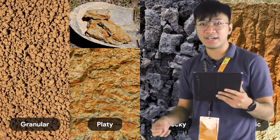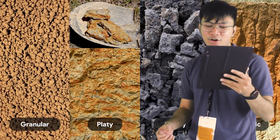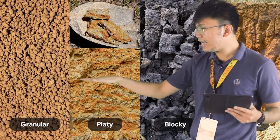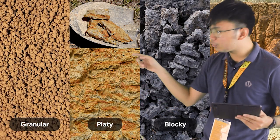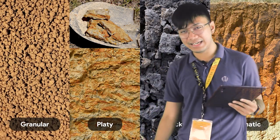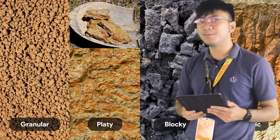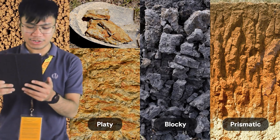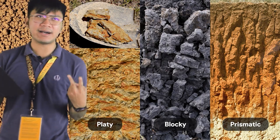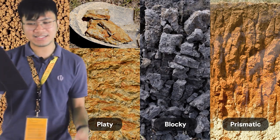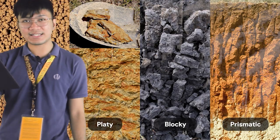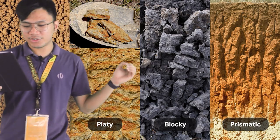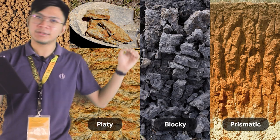Platy structure is made up of soil particles aggregated in thin plates or sheets piled horizontally. Water has more difficulty passing through platy soil and tends to move sideways. Blocky structure — either subangular or angular blocky — consists of soil particles clinging together in nearly square or angular blocks with sharp edges. Water has difficulty penetrating blocky soil structure, and it is usually found deeper in the soil profile.